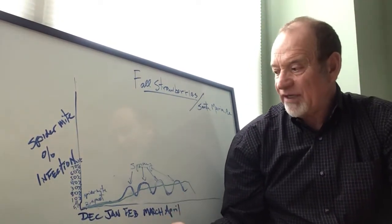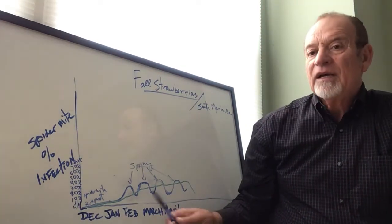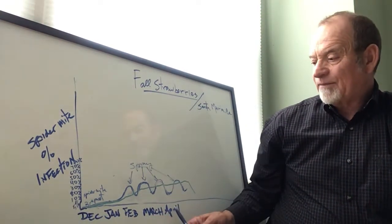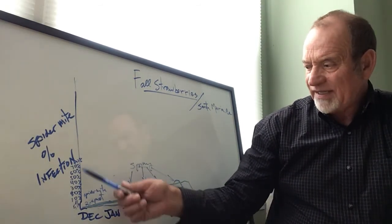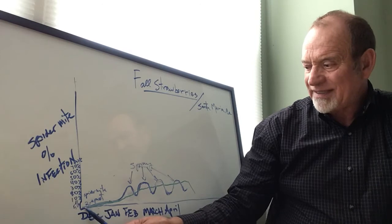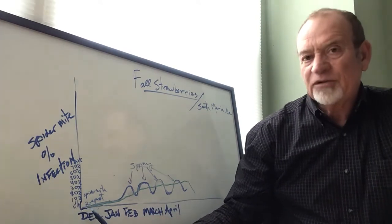Calibrating the tractor to get 80-90% kill is a must. I have my graph here, with time on the bottom and percent infection on the vertical axis. This shows the timing of the two-spot.